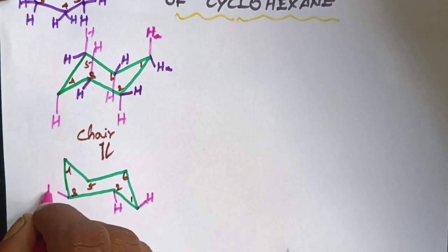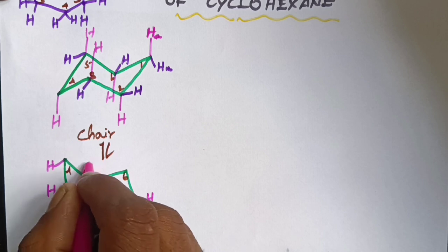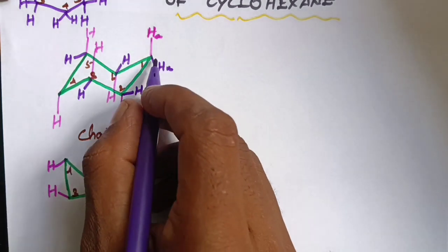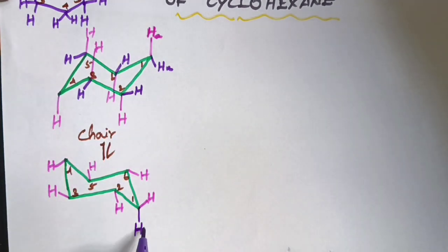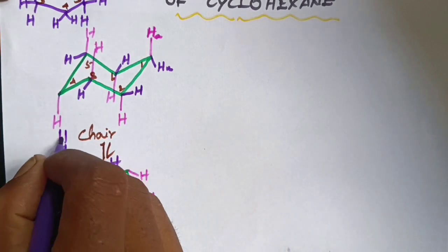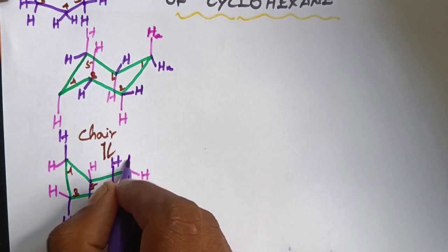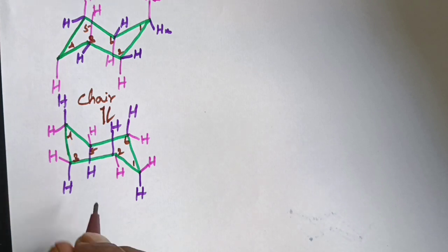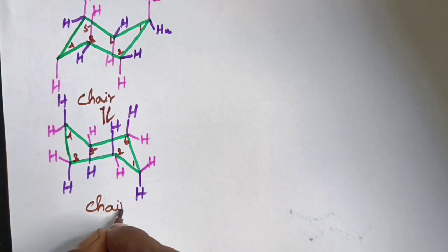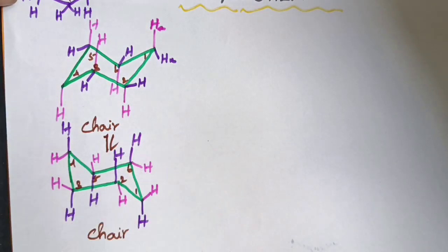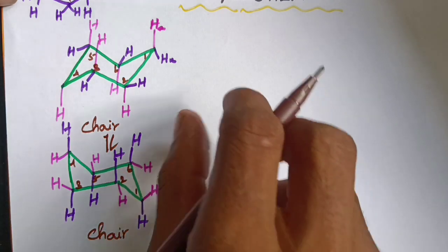After the ring flip, the positions change — what was axial hydrogen becomes equatorial hydrogen, and what was equatorial becomes axial. The axial and equatorial positions interchange when going from one chair conformation to the other.